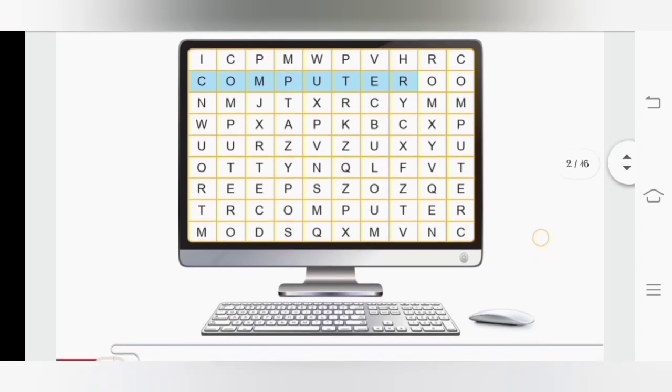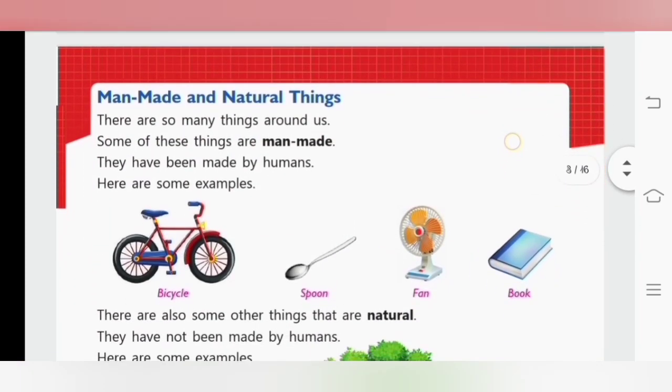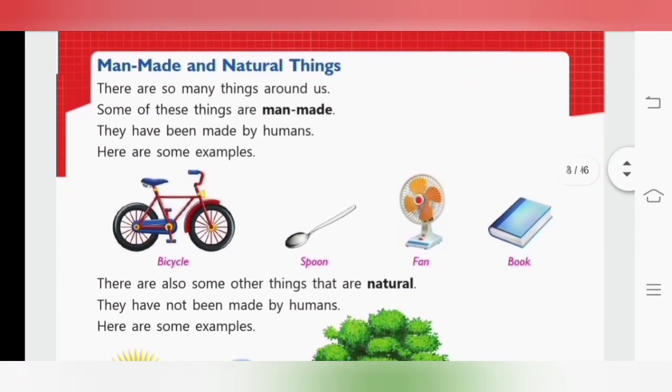Now we will start reading our first topic that is man-made and natural things. There are so many things around us. Some of these things are man-made. They have been made by humans. Here are some examples. Bicycle, spoon, fan and book. So children, what are man-made things? The things which are made by humans or man are called man-made things.